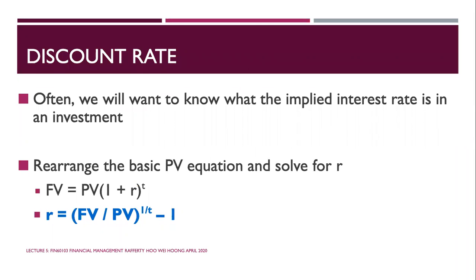The discount rate: often we want to know the implied interest rate in an investment. Using the same formula FV = PV × (1 + r)^t, rearranging for r gives: r = (FV / PV)^(1/t) − 1. If you cannot remember how to rearrange it, memorize this formula directly — it is quite straightforward.